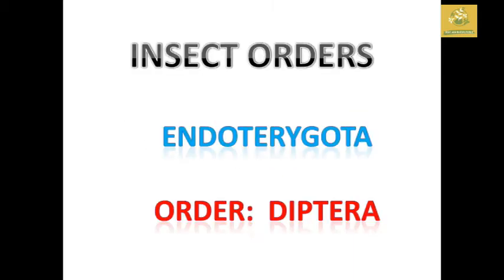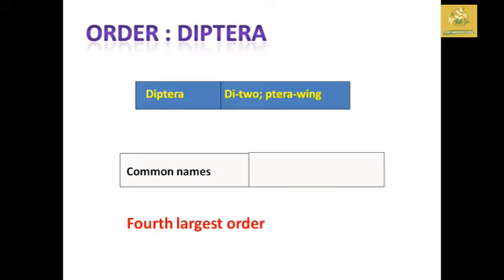In this video we are going to see about Fundamentals of Entomology. I am going to cover the insect orders which are Endopterygota, and I am going to cover the first order Diptera. 'Di' means two and 'ptera' means wings. Diptera is said to be the fourth largest order in insect classification. The common names are true flies, mosquitoes, gnats, and midges.